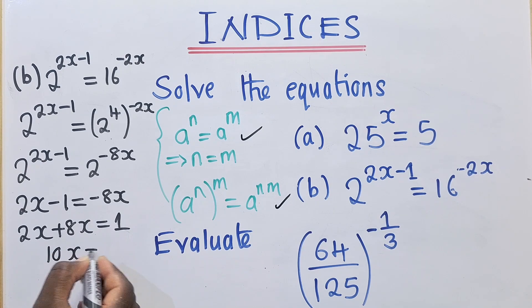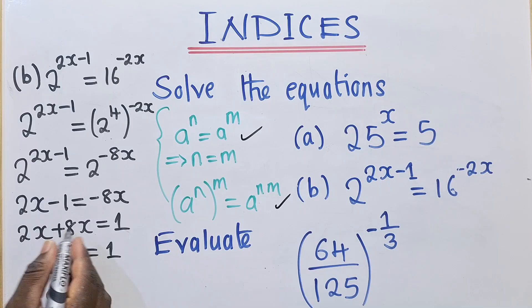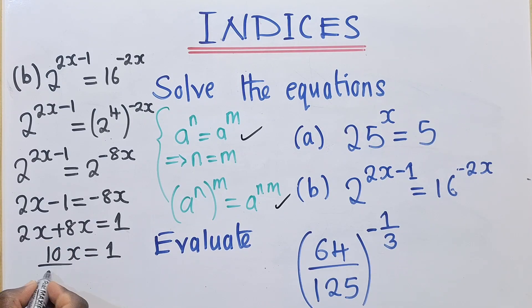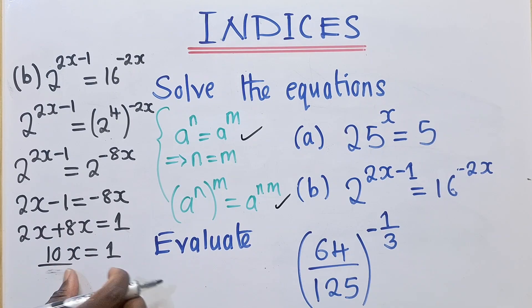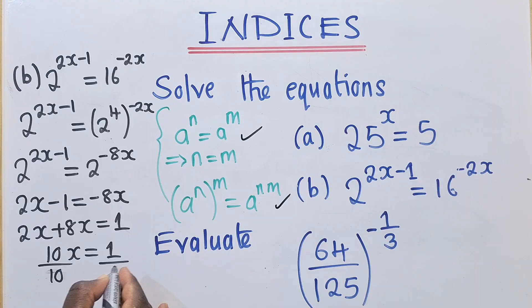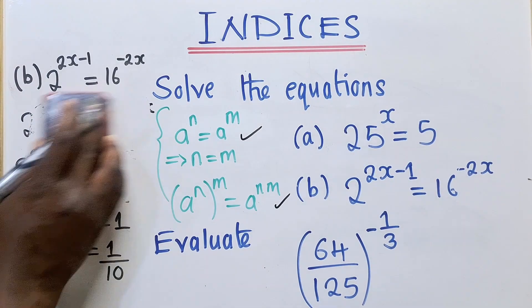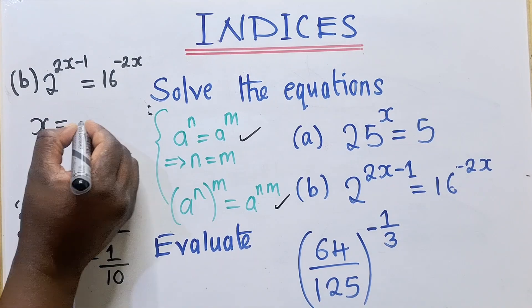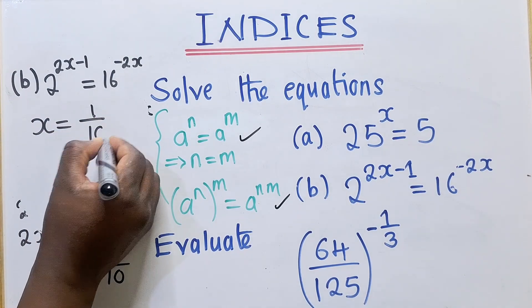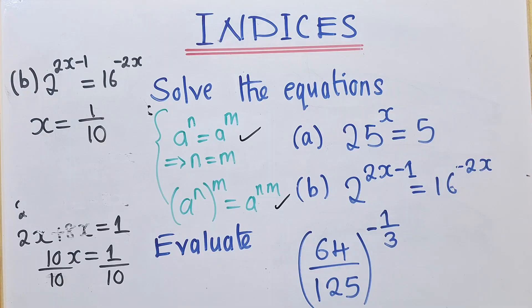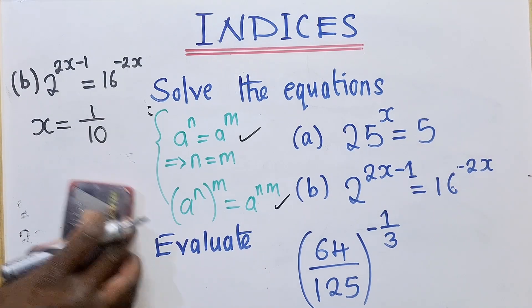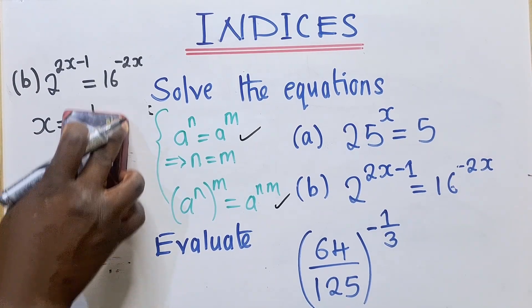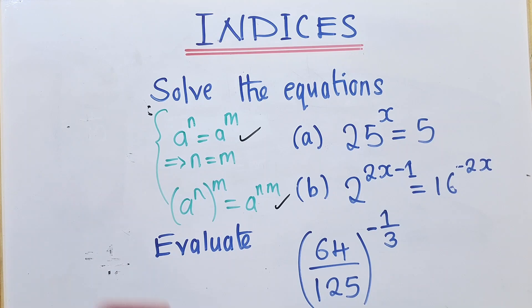We shall have 10X is equal to 1. When we add these two, divide by 10 and here by 10. So the value of X, let me write it here. The value of X will simply be equal to 1 over 10, which is this one. So that's it. We can now go to our last question where we need to evaluate this one.